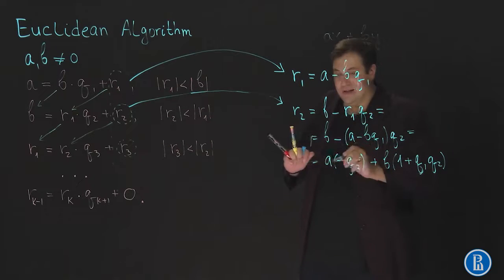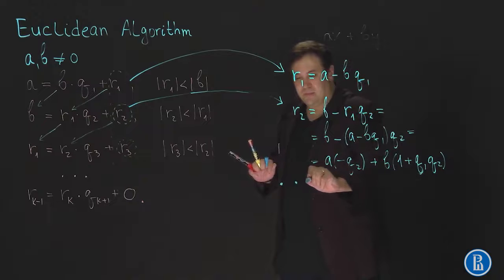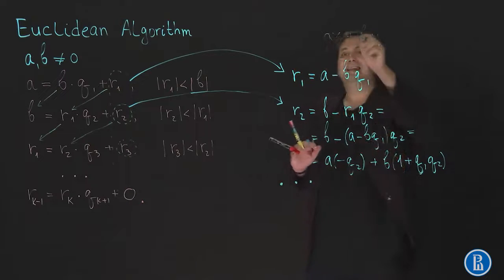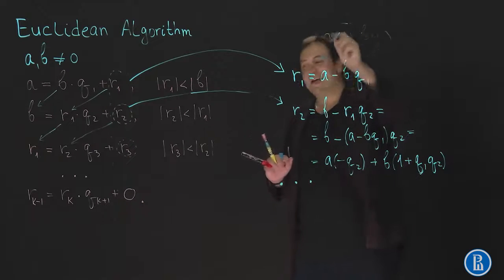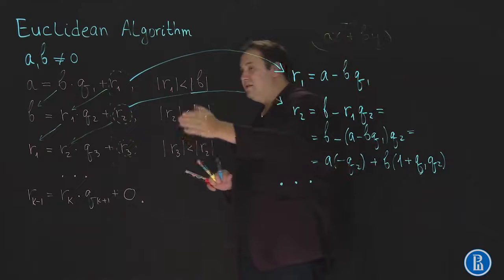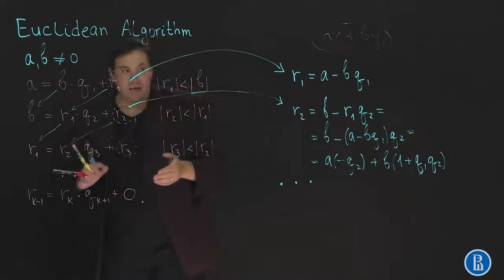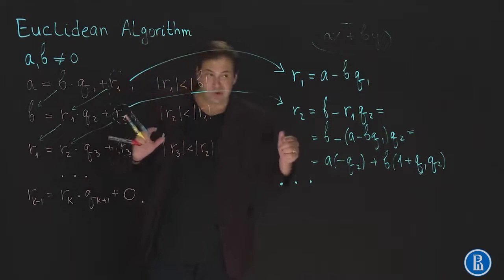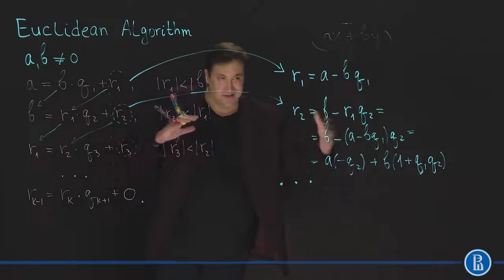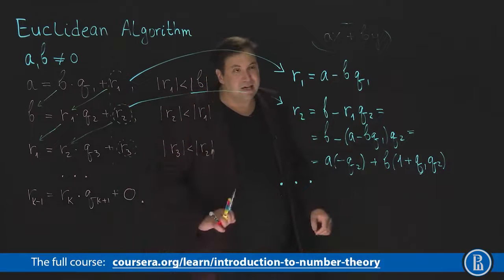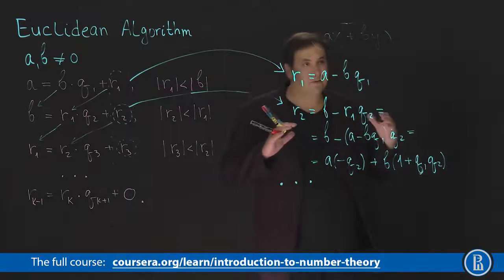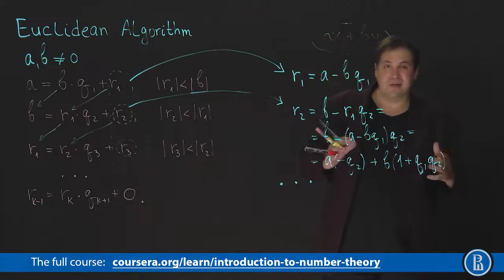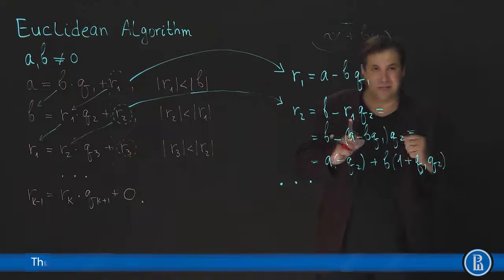But continuing this way we will obtain linear representations of all of these remainders. And we will use this conclusion about linear representation while proving the theorem about linear representation of the greatest common divisor. Stay tuned.